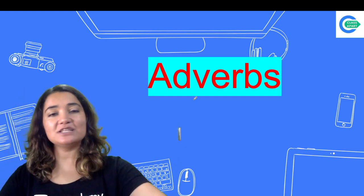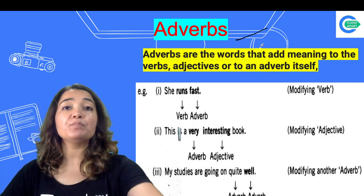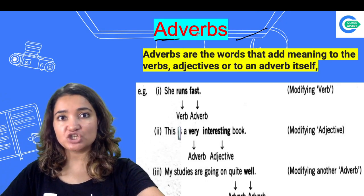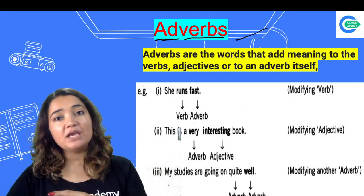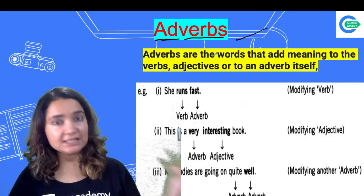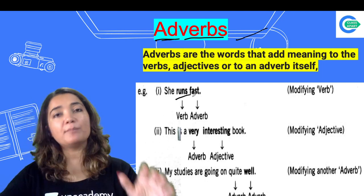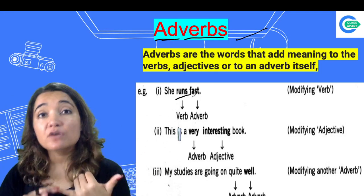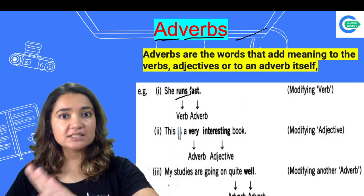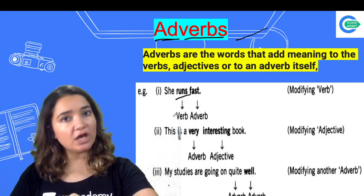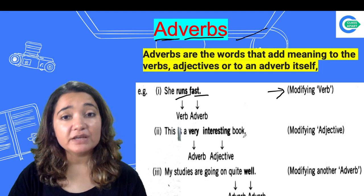Let's start without any further ado and learn about adverbs. So adverbs are words which add meaning to verbs, adjectives, or adverbs itself. The word is made from 'ad' plus 'verb' — so adverb tells you more about your verb, adjective, or adverb in a sentence. For example: 'She runs fast.' Here 'run' is your verb, and 'fast' is telling you about the verb.